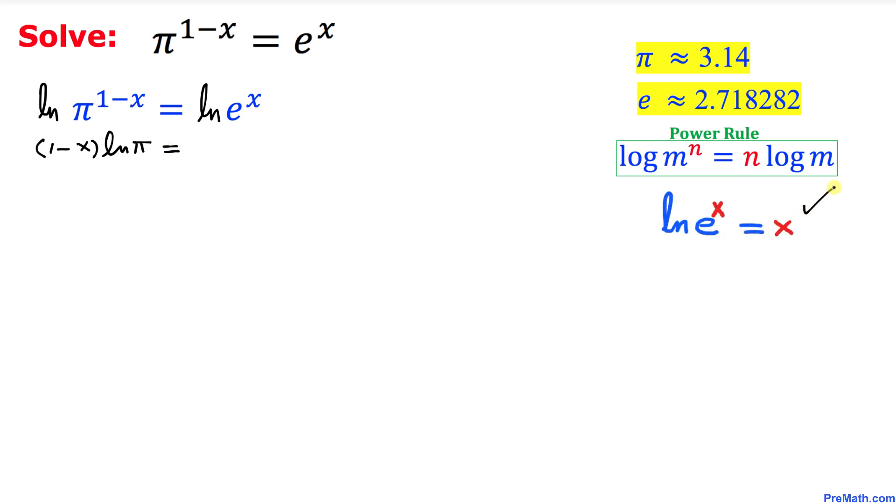and now let's recall this fact. Natural log of e^x is always equal to x as this natural log and e undo each other. So therefore the right hand side simply becomes equal to x.